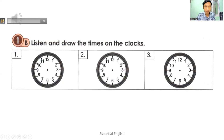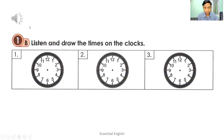Listen and draw the times on the clocks. One: it's a quarter past three. Two: it's half past seven. Three: it's a quarter to ten.